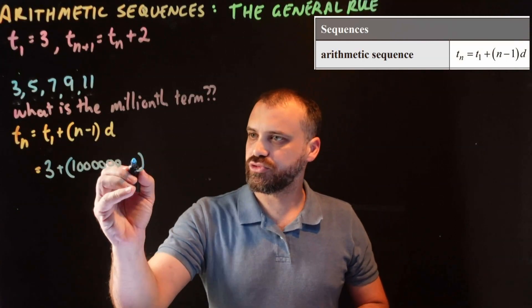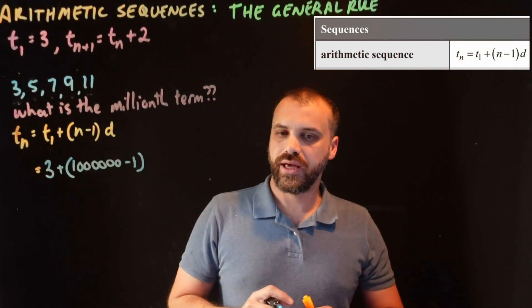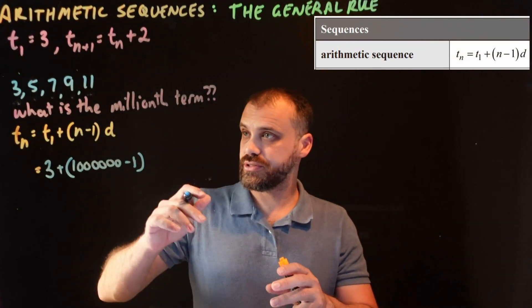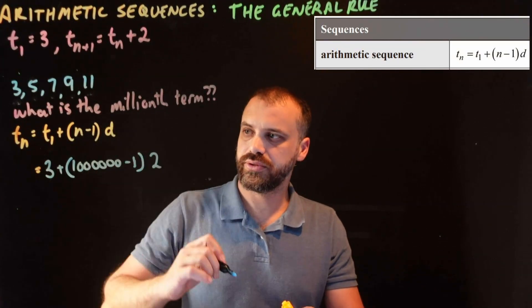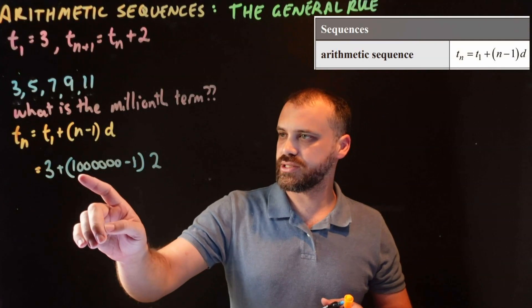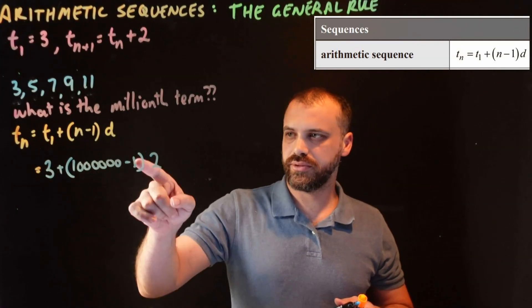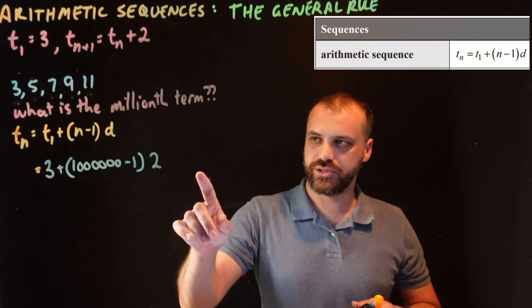And then I subtract 1, right? And then common difference, 2. So that says 3 plus 1 million minus 1 multiplied by 2.